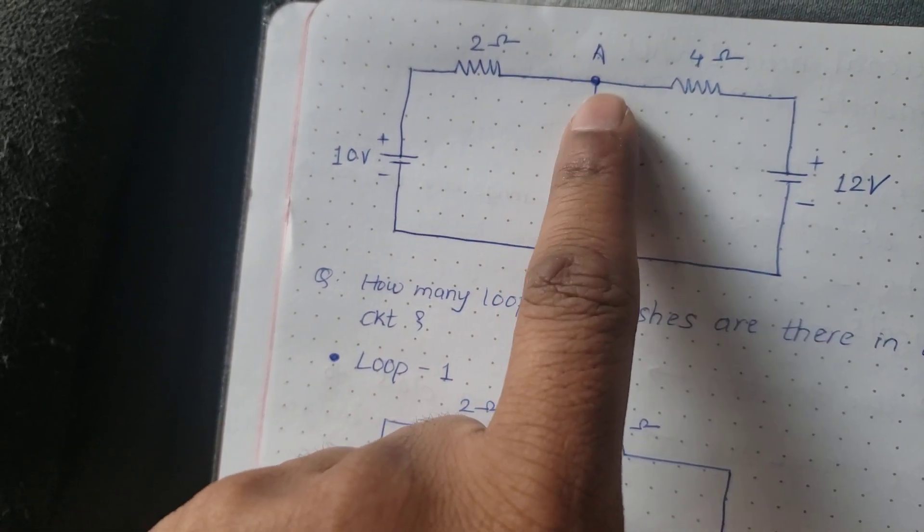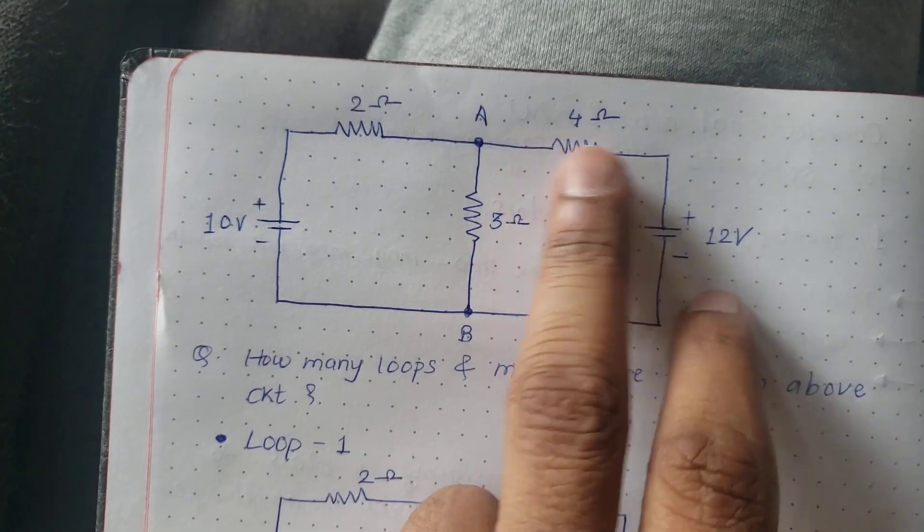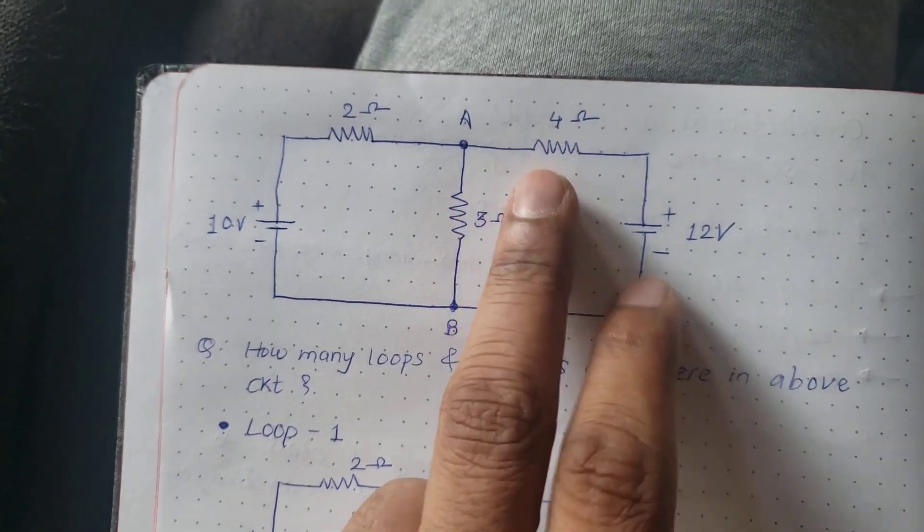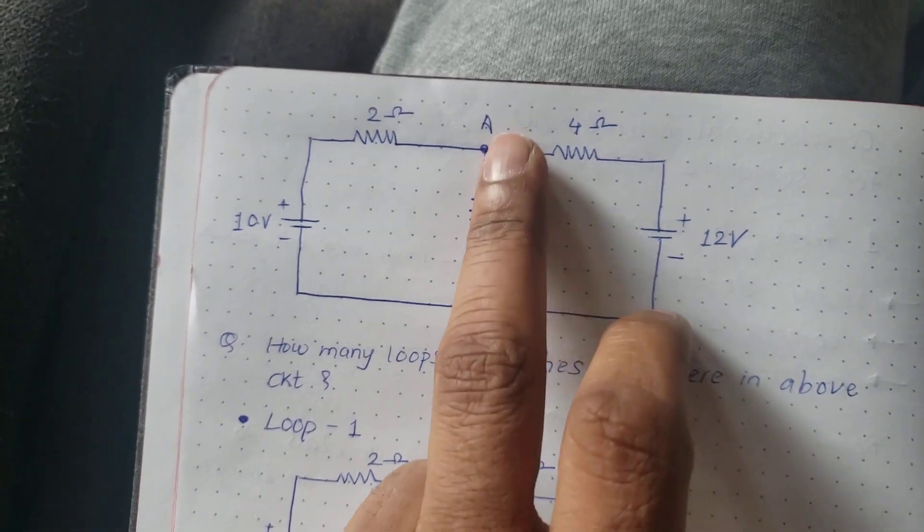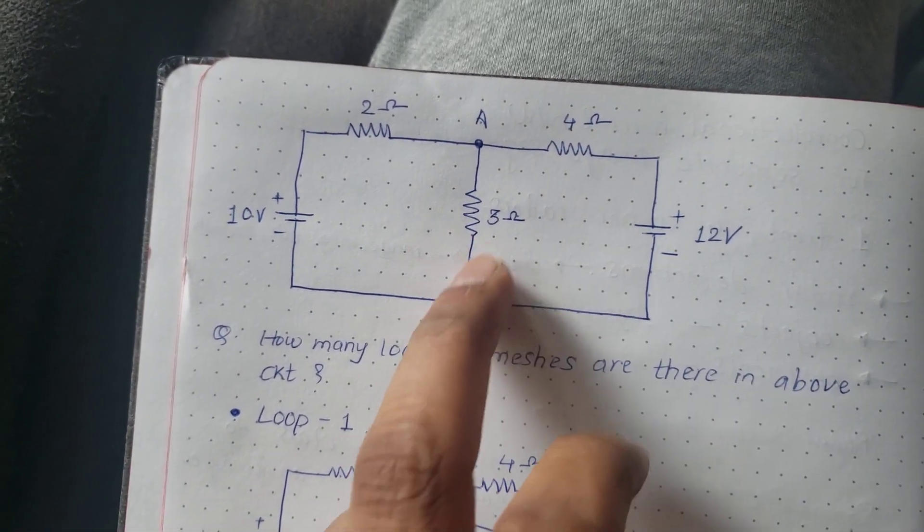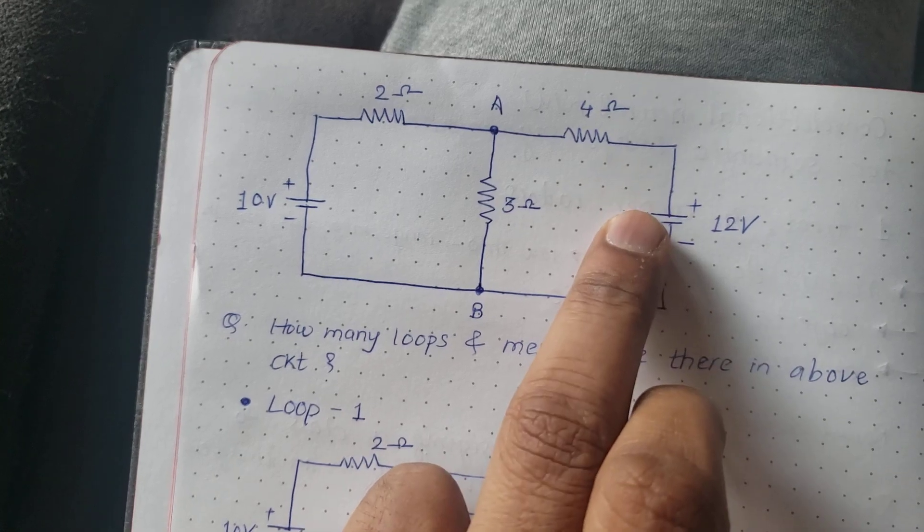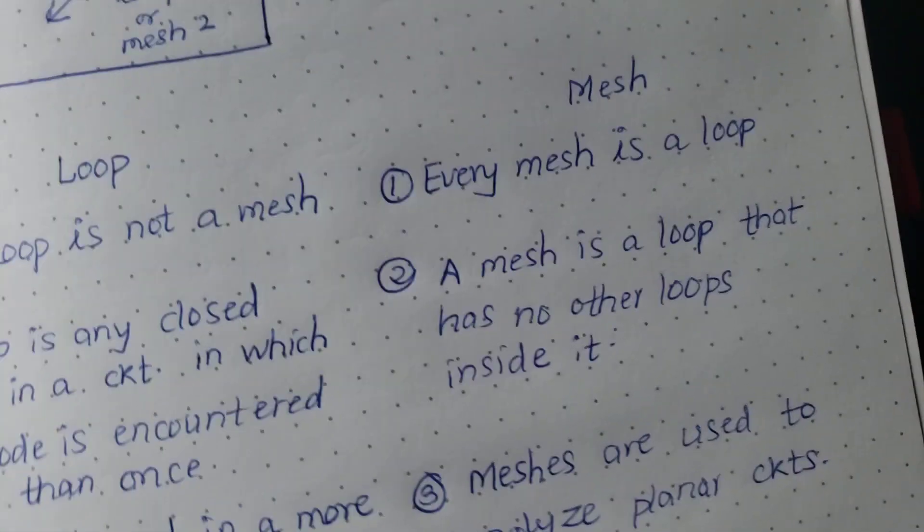And again closing here at A. So again this is a closed loop. Basically mesh has to be a loop, so it is a loop because no node is coming more than once. And the second point is very important.